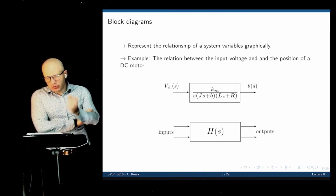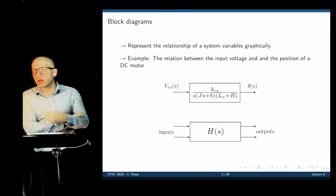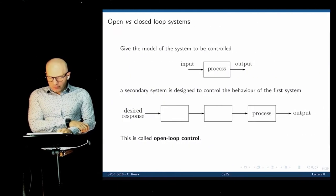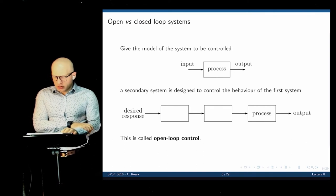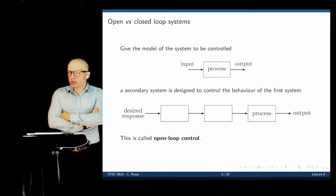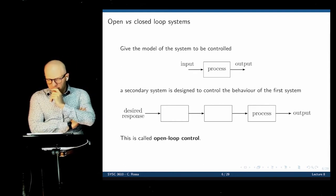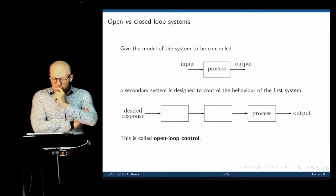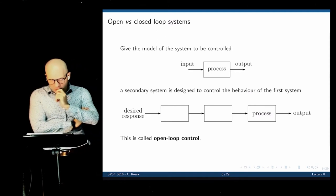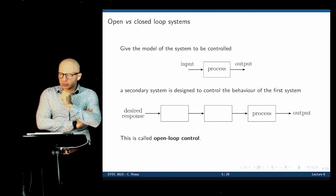The main idea is to represent the relation between different variables in a system graphically. We are doing this because we want to see how feedback loops operate and how they are part of the process. Let's introduce the concepts of open-loop systems and closed-loop systems.